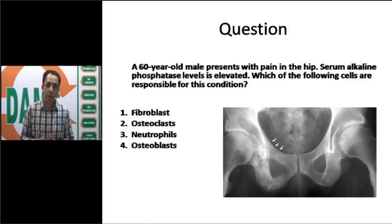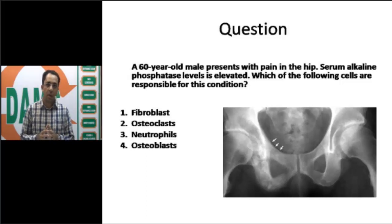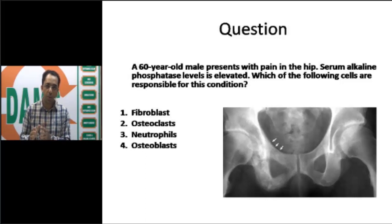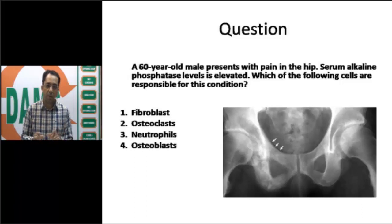The question says: a 60-year-old male presents with pain in the hip. The serum alkaline phosphatase level is elevated, and X-rays are provided. Which of the following cells are responsible for this condition: fibroblasts, osteoclasts, neutrophils, or osteoblasts? This is a very typical example of a USMLE Step 1 question.